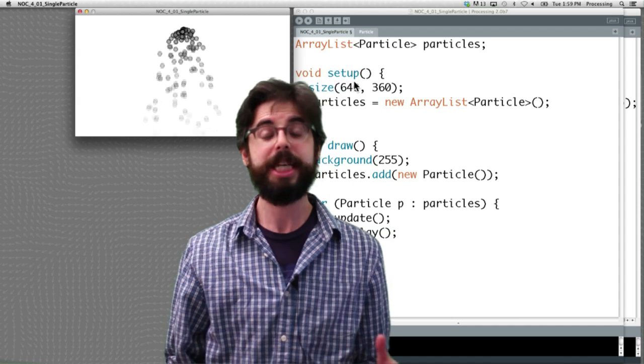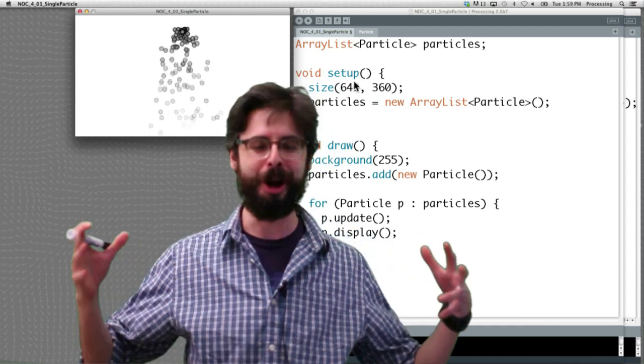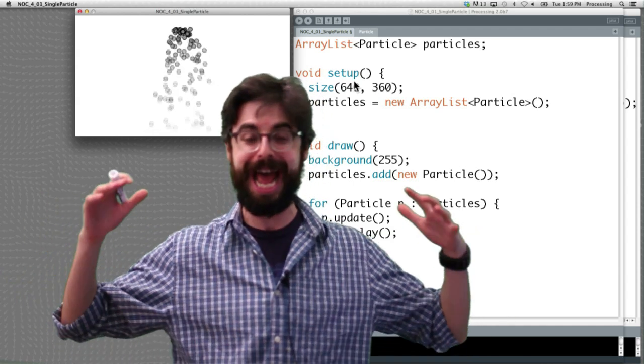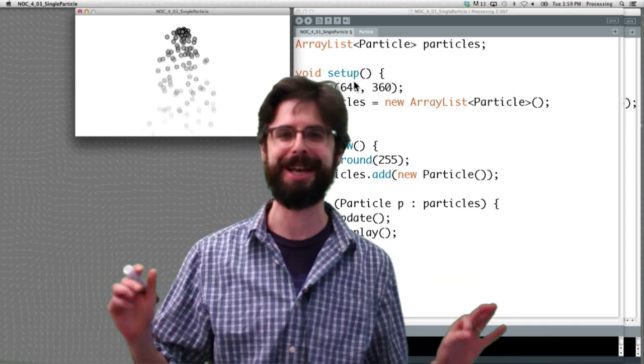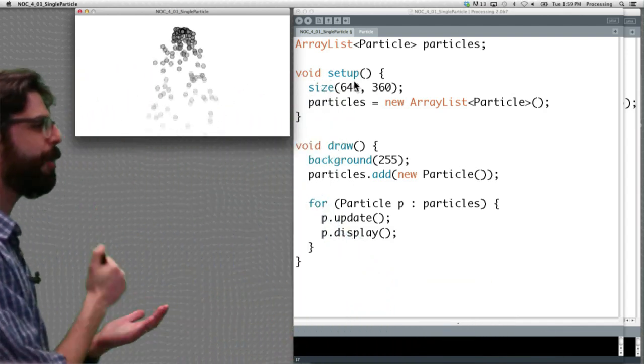But here's the issue: this ArrayList is getting larger and larger and larger. We're adding and adding and adding particles to it, we're never deleting them. So we need to figure out how do we delete them.